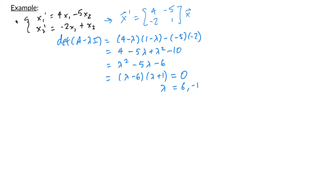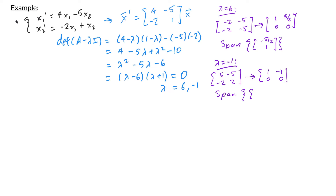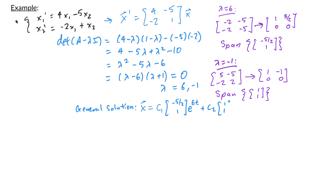For lambda equals 6, the null space of (negative 2, negative 5, negative 2, negative 5) row reduces to (1, 5/2, 0, 0), so the eigenspace is the span of (negative 5/2, 1). For lambda equals negative 1, the null space of (5, negative 5, negative 2, 2) row reduces to (1, negative 1, 0, 0), so the eigenspace is the span of (1, 1). The general solution is x equals c1 times (negative 5/2, 1) e to the 6t plus c2 times (1, 1) e to the negative t. Since one eigenvalue is positive and the other negative, the origin is a saddle point.